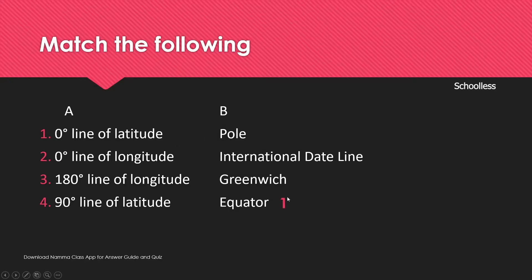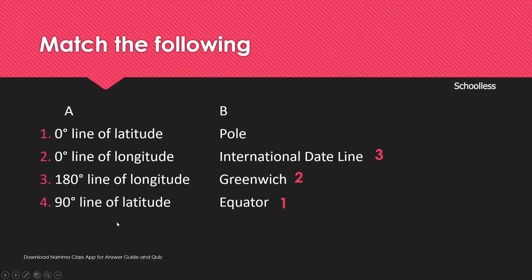Zero degree line of longitude is the Greenwich Meridian. 180 degree line of longitude is the International Dateline. 90 degree line of latitude is the Pole. That completes the match the following.